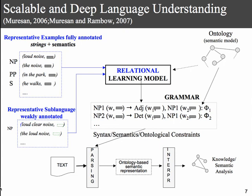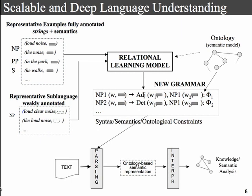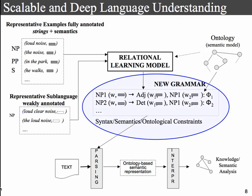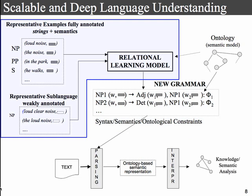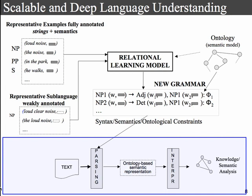In this talk I'm going to present briefly our learning model, which is relational, and the data it learns from — I call it learning from representative data. For example, a representative example for a noun phrase can be just an adjective or a noun or the determiner. Learning from this representative data assures learnability guarantees. I will introduce the grammar formalism that captures syntax, semantics, and models the ontology, then focus on the relational learning model, and show how this can be used in language understanding.